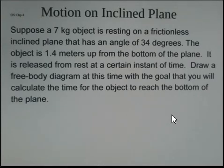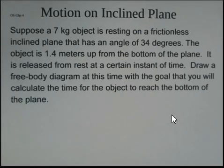This example problem deals with motion on an inclined plane. We have a 7 kilogram object on a plane with no friction. The angle of the plane up from the horizontal is 34 degrees, and the object currently is at rest 1.4 meters up along the plane from the bottom.